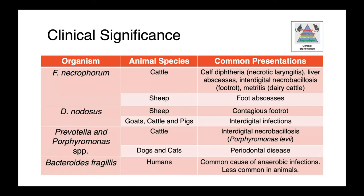Fusobacterium necrophorum is associated with a wide variety of infections. In cattle, we see calf diphtheria or necrotic laryngitis, liver abscesses — following rumenacidosis and translocation from the rumen as discussed in the actinomycetales lecture — interdigital necrobacillosis or foot rot, and metritis in dairy cattle. In sheep, it plays a role in foot abscesses. Diclobacter nodusis causes contagious foot rot in sheep and a variety of other interdigital infections in goats, cattle, and pigs. Prevotella and Porphyromonas species are also involved in interdigital necrobacillosis in cattle, alongside Fusobacterium.